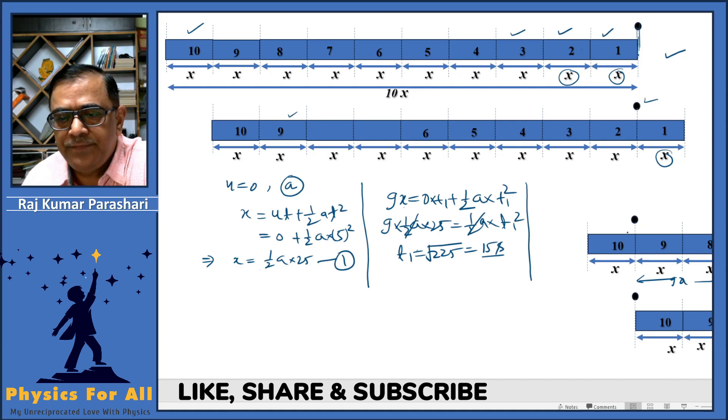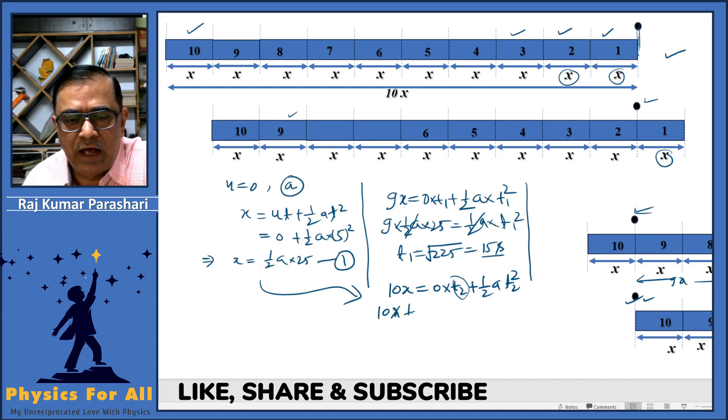As the train continues its journey, the tenth bogey will cross the observer. As the tenth bogey crosses the observer, distance covered by the train will become 10x, and this equals zero into t2 plus half a is to t2 squared. t2 is the time taken by the train as the tenth bogey crosses the observer, and t1 is the time as the ninth bogey crosses the observer. Now again, substitute the value of X over here. This is 10 multiplied by half a into 25, and this equals half a into t2 squared. Half a and half a will cancel, and this implies that t2 will be 5 root of 10, and root of 10 is equals to 3.16 seconds. As we multiply, we get 15.80 seconds.